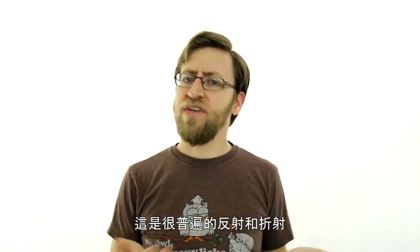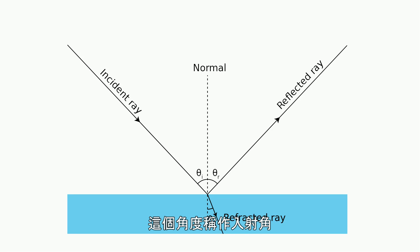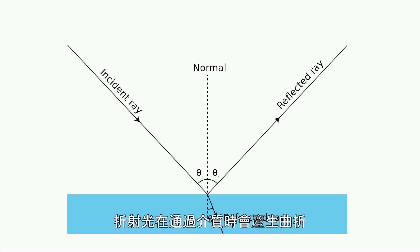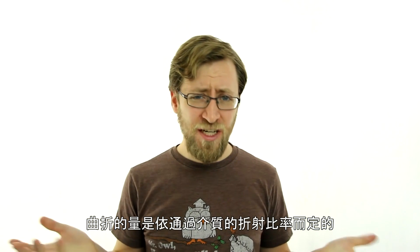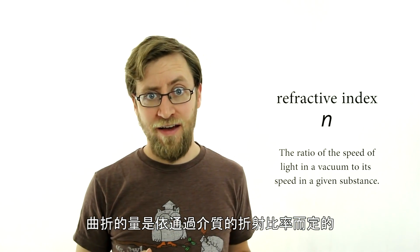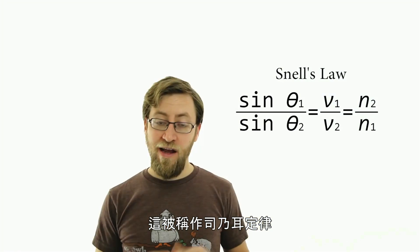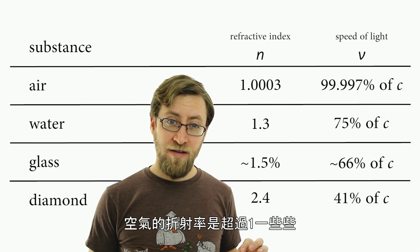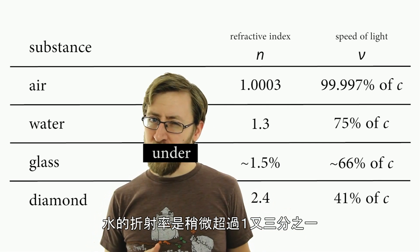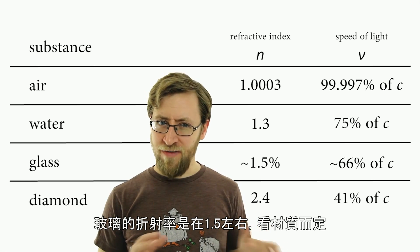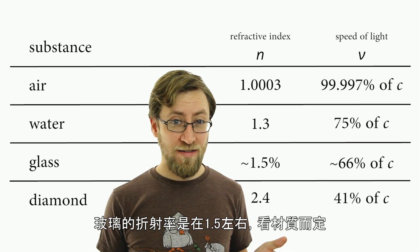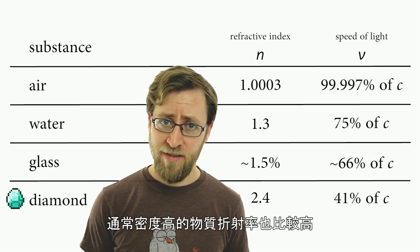So now we have the universe and we have light — how does it become polarized? The most common way is for it to be reflected or refracted. When light hits a surface, the angle at which it hits it is called the angle of incidence, and the reflection comes back up with the opposite angle. The refraction goes down through the surface and gets bent. How much it gets bent is determined by the refractive index of the substance that it's going into, and also the one that it's coming from — this is described by Snell's Law. Air has a refractive index just a little bit over one. Water has a refractive index just a little bit over one and a third, and glass has a refractive index around one and a half, depending on the type of glass. Usually denser materials have a higher refractive index.